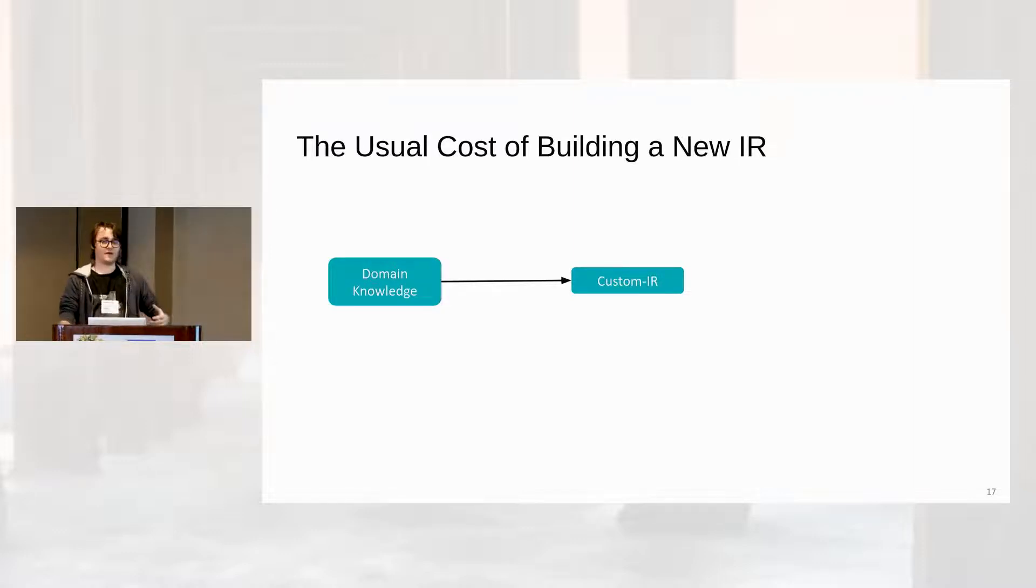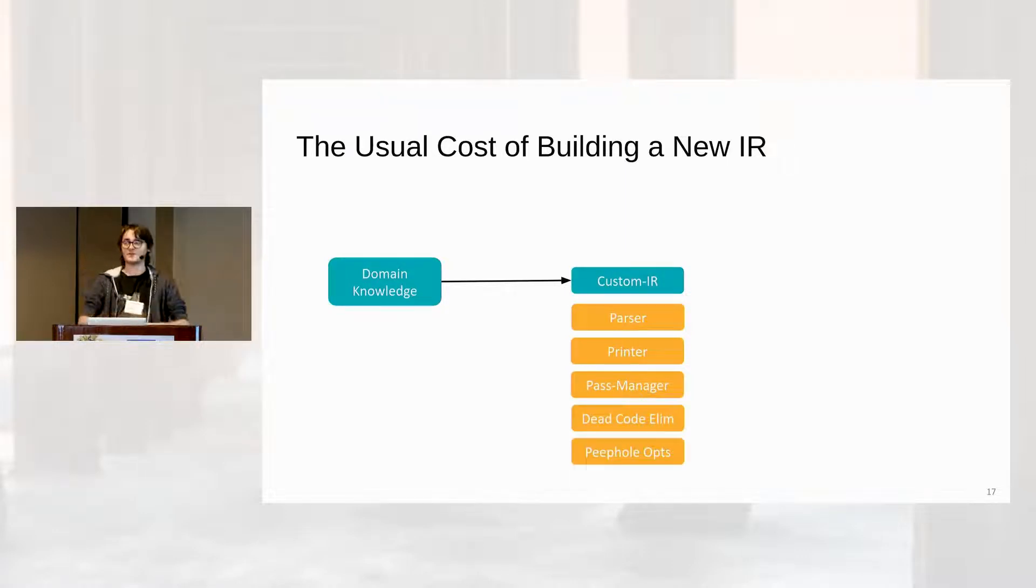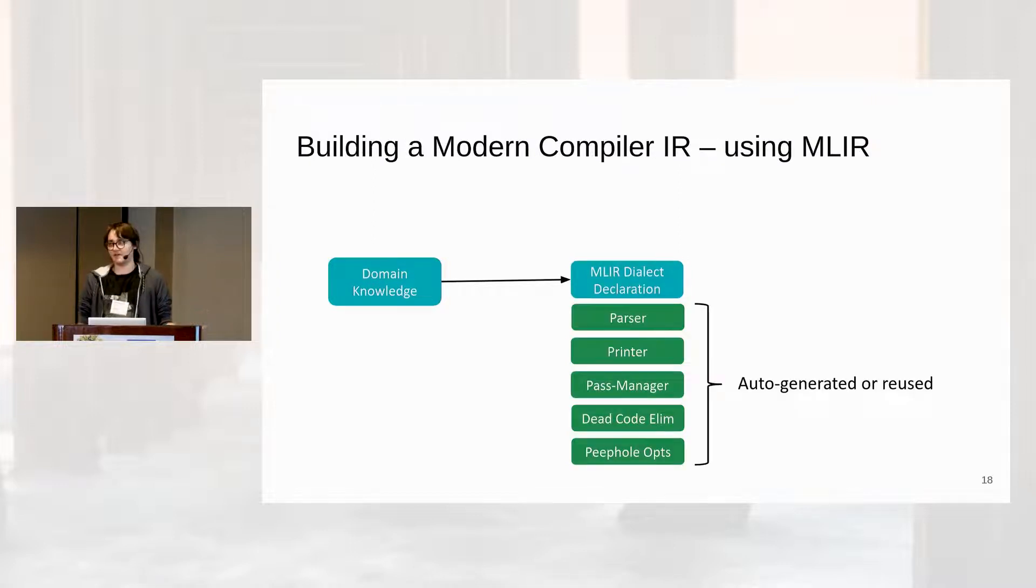So one of the reasons why this is happening is that whenever you want to create your own intermediate representation, usually you would start by having your domain knowledge that you want to translate into this intermediate representation. And you would need to write a new data structure, you would need to write a parser, a printer, some pass manager, optimizations, or dead code elimination. Essentially, you have a lot of things to reimplement.